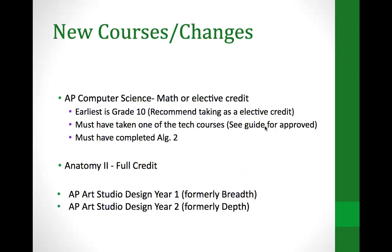Some new courses for next year: we are pleased to offer AP Computer Science, which can count as a math credit or an elective credit. The earliest you can take it is 10th grade, but we encourage taking it as an elective to continue the math sequence. Prerequisites are at least one technology course and completion of Algebra 2. Additionally, Anatomy 2 is now a full credit course instead of a half credit. AP Art courses are being renamed: AP Studio Art Design Year 1 and AP Studio Art and Design Year 2 — these are primarily name changes to align with AP standards.